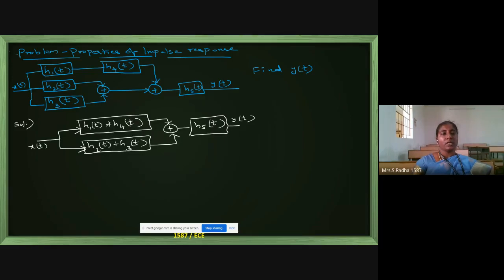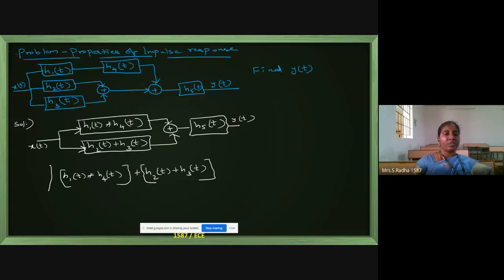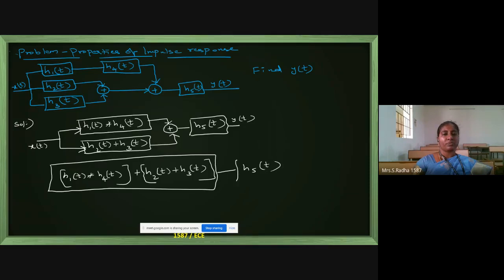Now these blocks are in parallel, so I have to add them. H1 of T convolution H4 of T is the first block. Then addition with H2 of T plus H3 of T — these are my two blocks in parallel. After this the summation point, and after the summation point it is H5 of T. Y of T is the overall output, X of T is the overall input.